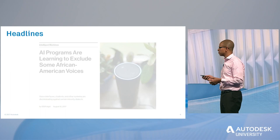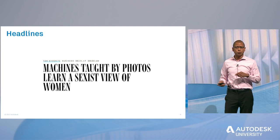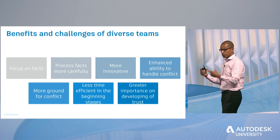We tend to have a lot of cautionary tales right now in AI because it's still relatively young. AI programs learning to exclude some African American voices, machines taught by photos to learn a sexist view of women, and Google Photos tagging African Americans as gorillas — these are examples of what can happen. What we're hoping for is that if you start to think about diversity and inclusion in an active way, your headline is that there isn't one — that diversity is an integrated part of what you do versus something dealt with retroactively.